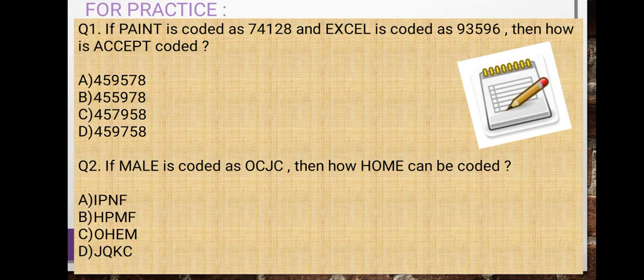Now, I am giving you three practice questions. Try these at home with the help of your parents. If PAINT is coded as 74128 and EXCEL is coded as 93596, then how is ACCEPT coded? You will write in rough space first PAINT's code, EXCEL's code, make ACCEPT word from both words and then solve it. Question two.